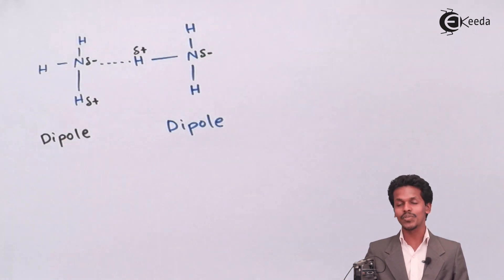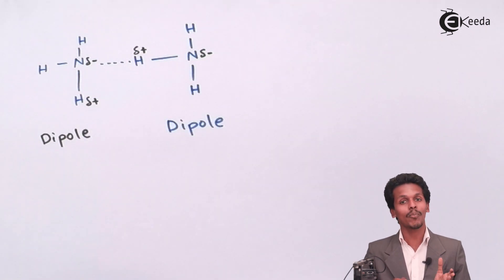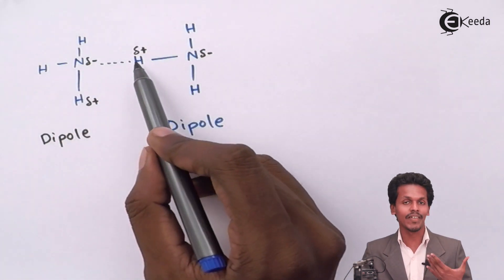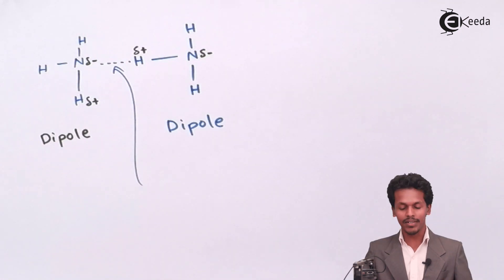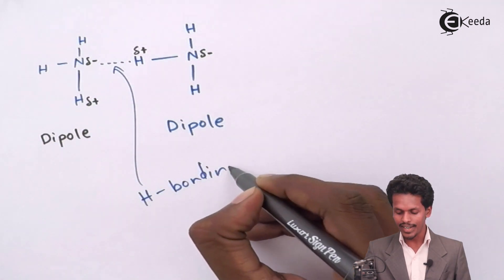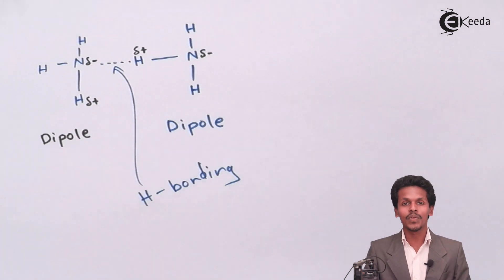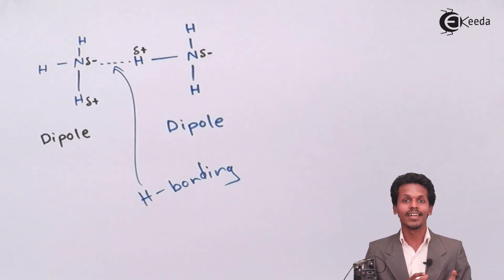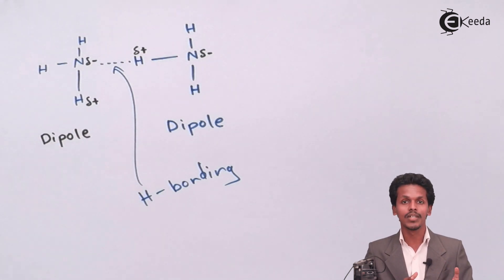This is a dipole-dipole interaction, but most precisely, it is also a hydrogen bonding interaction, because there is a hydrogen atom in the other molecule having a partially positive charge, while nitrogen has a partially negative charge. So this dipole-dipole interaction is hydrogen bonding. In various molecules, hydrogen bonding can occur as long as hydrogen is present during the interaction and there is an electronegativity difference between the hydrogen and the other electronegative molecule.